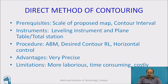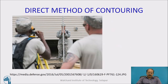Thereafter, that particular arrow can be located on the drawing sheet with the help of horizontal control, established using plane table survey. The advantage of the direct method of contouring is that it is very precise. However, the limitations are that it is more laborious, time consuming, and costly. You can see people holding the leveling staff and taking readings — this is part of the direct method.